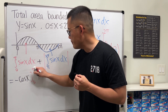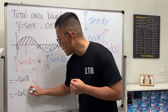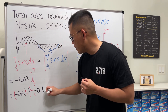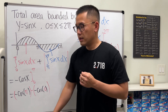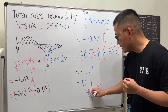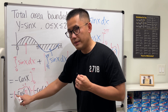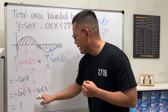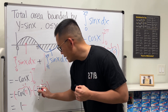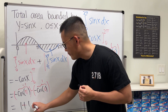Integrating sin(x), the antiderivative is negative cos(x), evaluated from zero to pi. Plugging in pi: negative cos(π). Then minus plugging in zero: negative cos(0). Cosine of π is negative one, so negative times negative one gives positive one. Cosine of zero is one, and subtracting that: minus negative one becomes plus one. So this integral equals two.